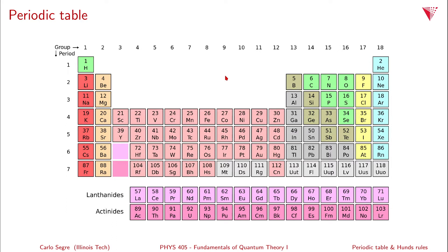Here's the periodic table and we'll start at the very top. The hydrogen atom has one electron which can be in a spin-up or spin-down state. The next atom is helium, which has two electrons. The ground state of helium has both electrons in the lowest spatial state with opposite spins.